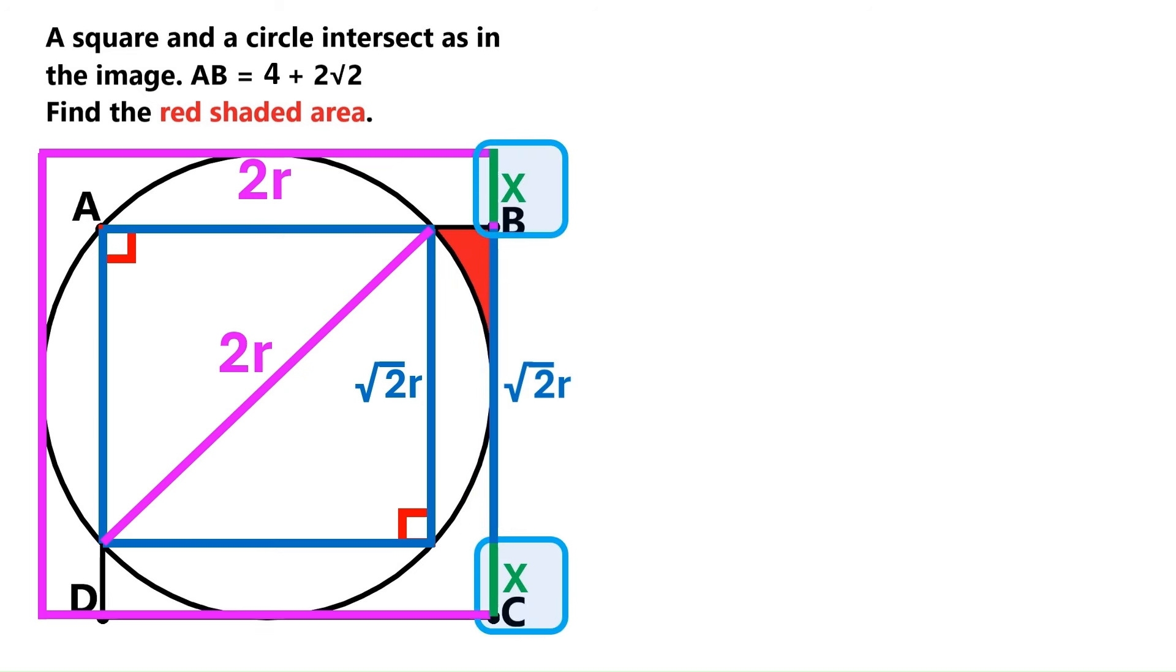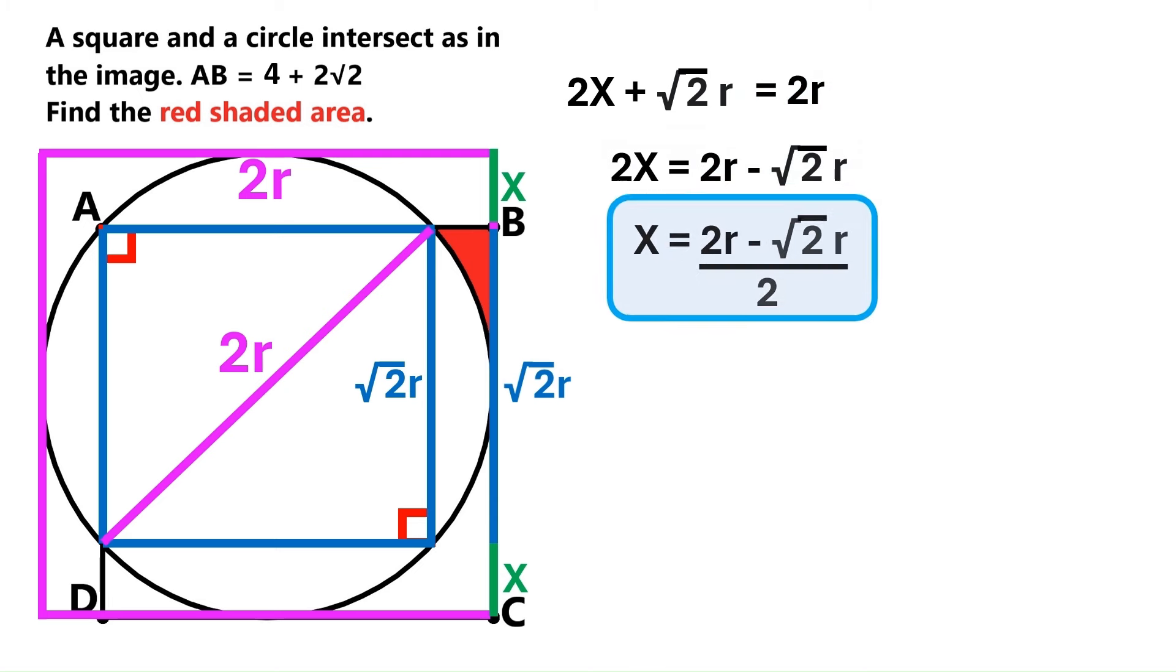Let's call them x. All this adds up to the side of the circumscribed square, which is 2R. So let's write that as an equation. 2x plus root 2 times R equals 2R. We do the math, and we find that x equals this.